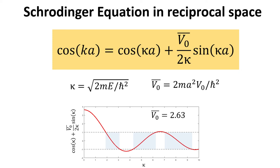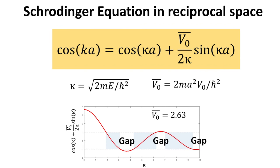Here, the gaps are the regions where the equality in the yellow box is not valid, as shown in the plot. Although derived in the context of a simple one-dimensional model, this conclusion is a general feature of the electronic behavior in solids.